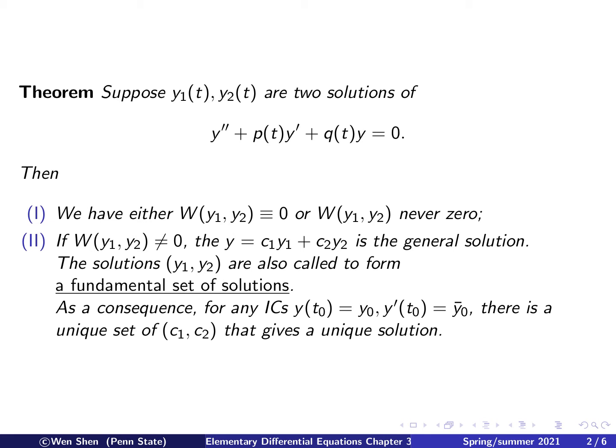As a consequence of the previous statement, if you are given any initial conditions — that is, y at t0 is given and y' at t0 is given — then there is a unique set of values for the constants c1 and c2 that will give a unique solution. So this means for a given set of numbers y0 and y0-bar, there is a unique solution for c1 and c2 when you try to find them.